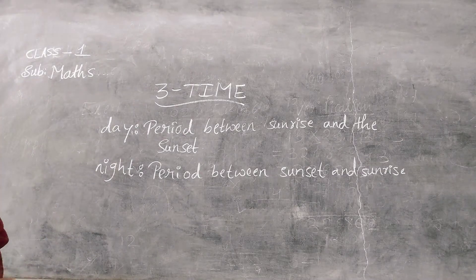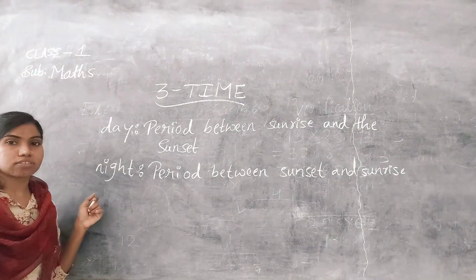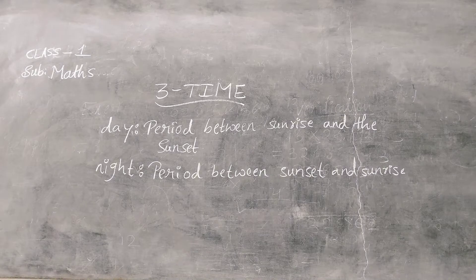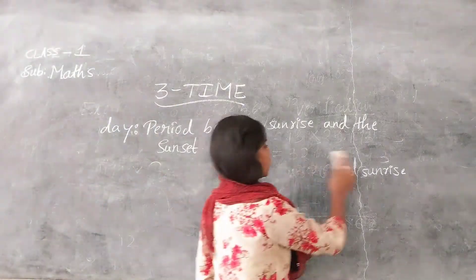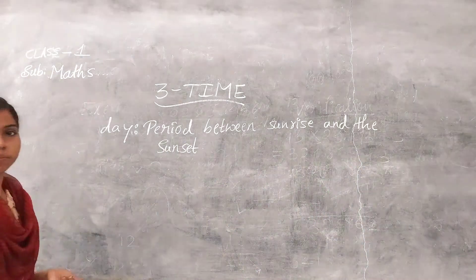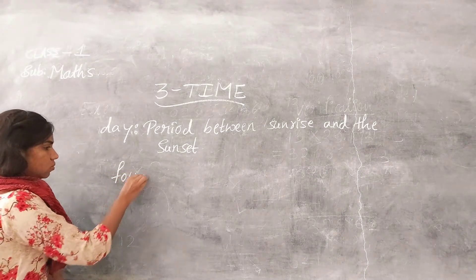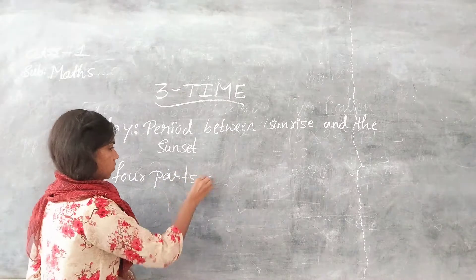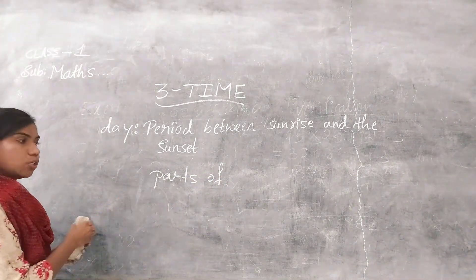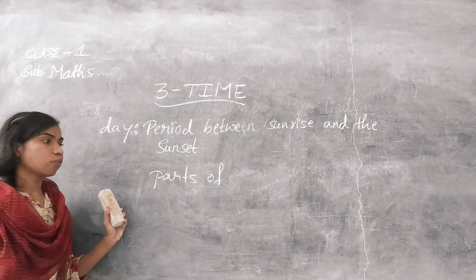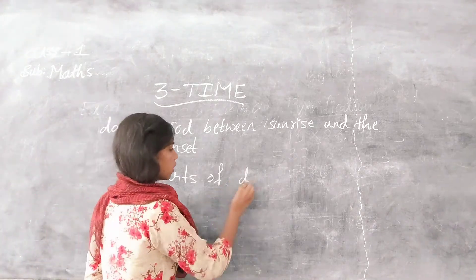Day is divided into four parts. Which are the four parts? Morning, noon, evening, and night. These four are the parts of the day.